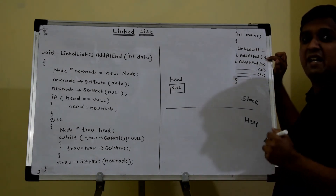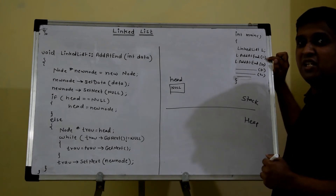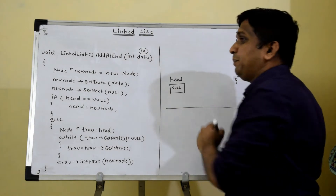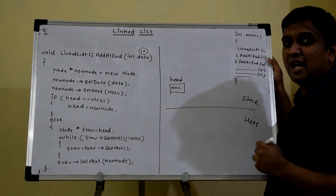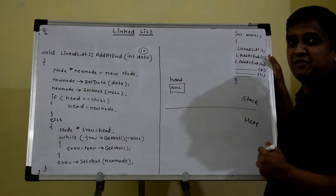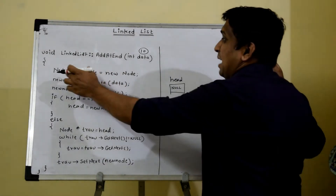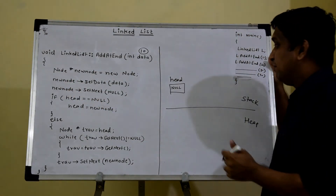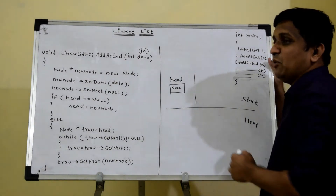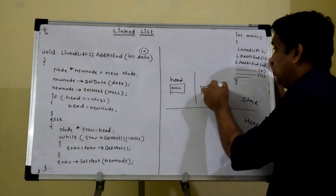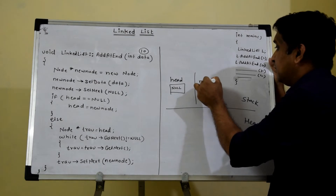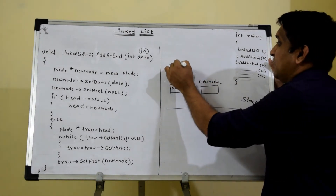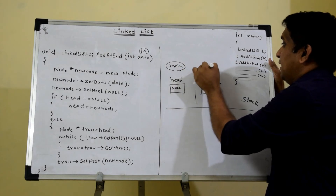I am calling add_at_end for the first time — l.add_at_end — passing value 10, so this 10 value will be copied into the argument which is data. Inside the add_at_end function, I take one local pointer: node* new_node. This pointer will allocate memory onto the stack frame of add_at_end. Suppose this is the stack frame for main and this is the stack frame for add_at_end.